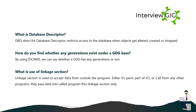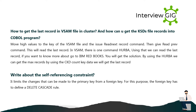How to get the last record in a KSDS file and cluster, and how can you get the KSDS file records into a COBOL program? Move HIGH-VALUES to the key of the KSDS file, then issue a READ NEXT RECORD command, followed by a READ PREV command — this will read the last record. Using HARBA, we can get the maximum records by using the CKD (Count Key Data), which will also give us the last record.